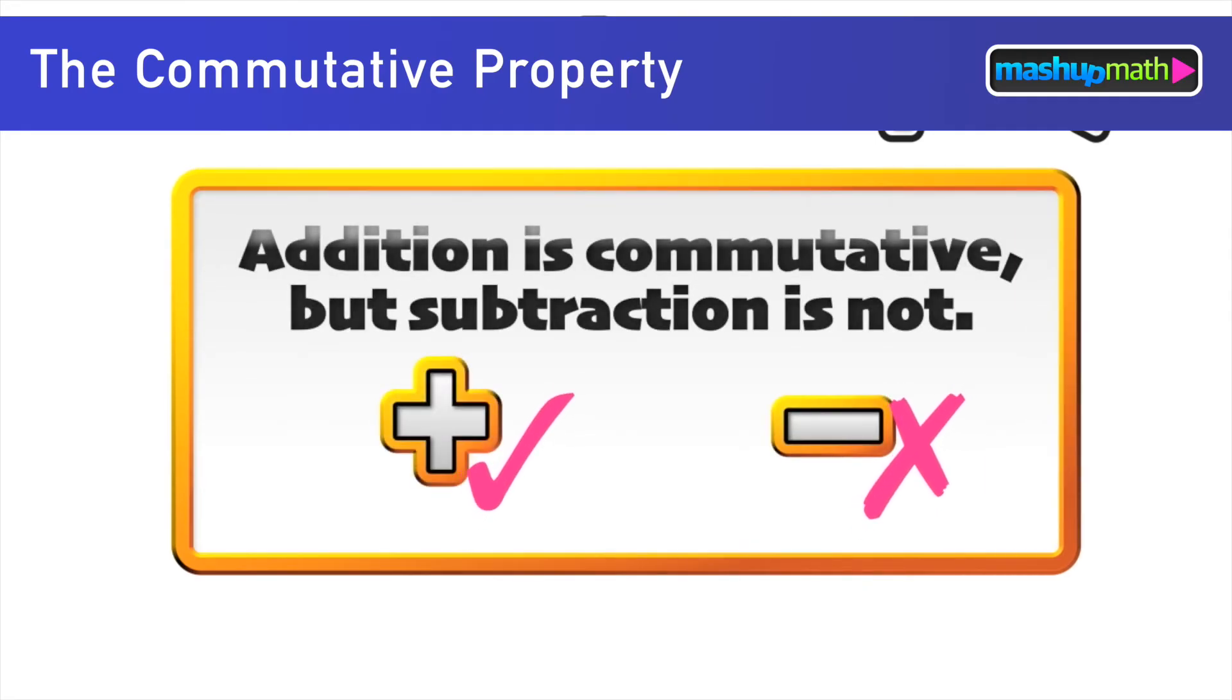So to quickly summarize we know now that addition is commutative but subtraction is not.